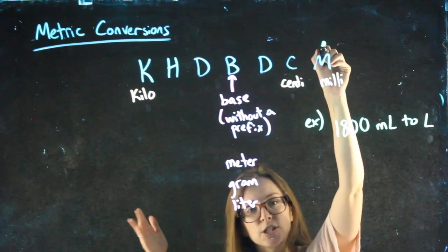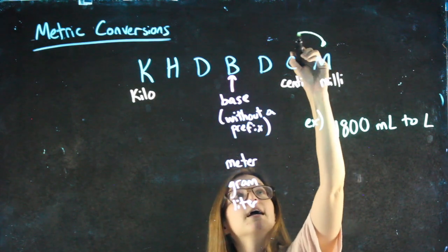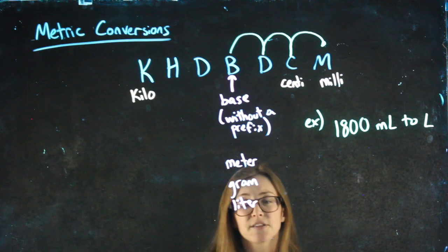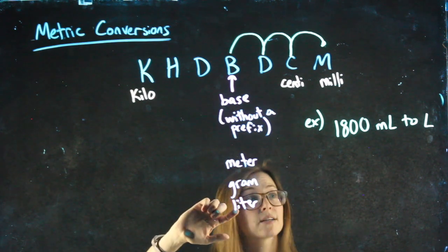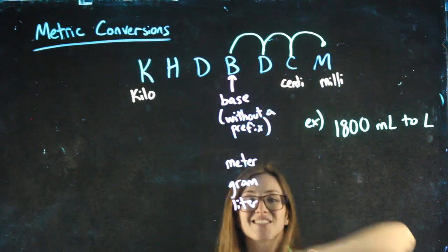I hop from letter to letter, not the spaces between, but from letter to letter. So I'm at the M. It goes one, two, three spots to the left will get me to the base, to liter without a prefix.